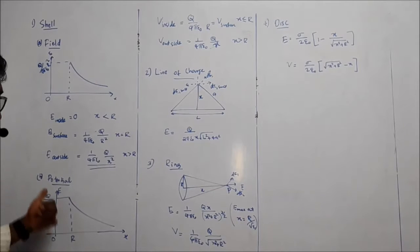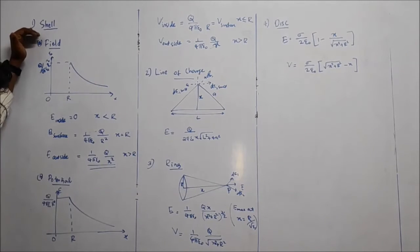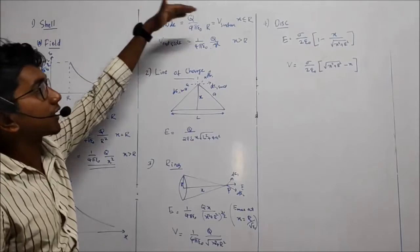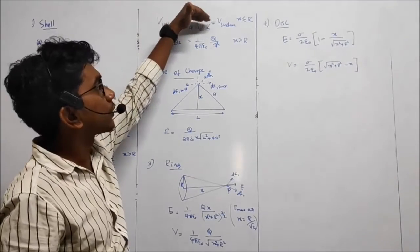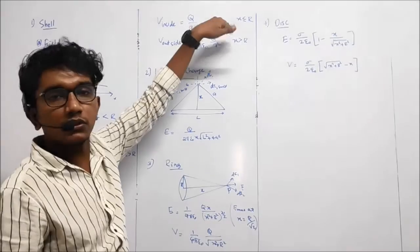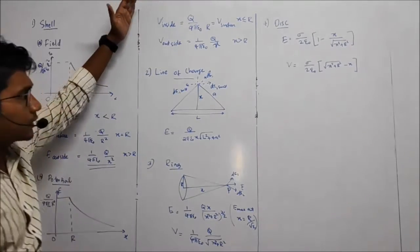So, electric potential. Potential due to a shell. That is, what about inside and surface? That is, 1 by 4 pi epsilon 0, q by r. So, what about the outside? 1 by 4 pi epsilon 0, q by r.